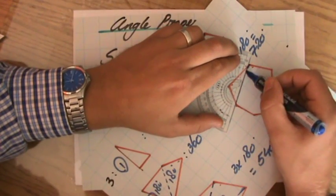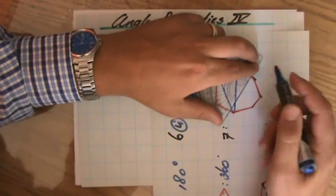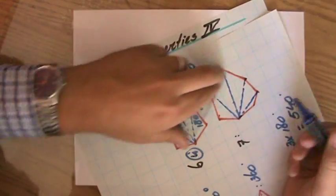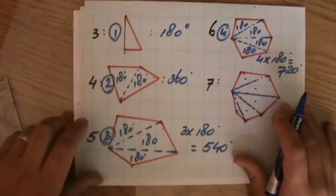Now, the heptagon, I'll do it relatively quickly. One, two, three, four of those lines, so that's one, two, three, four, five triangles, okay?